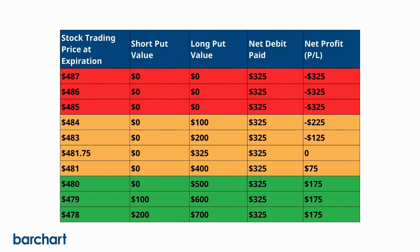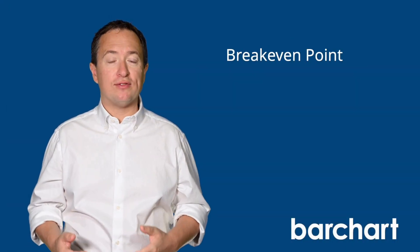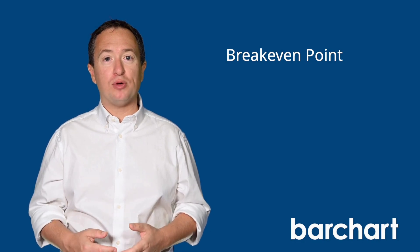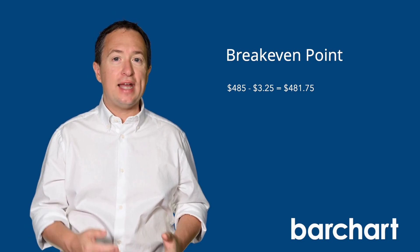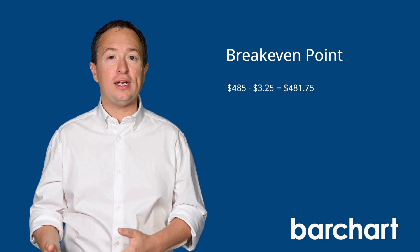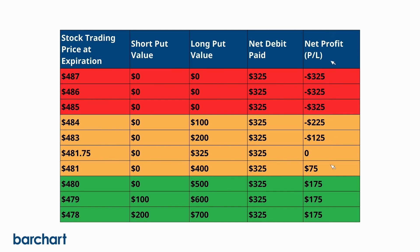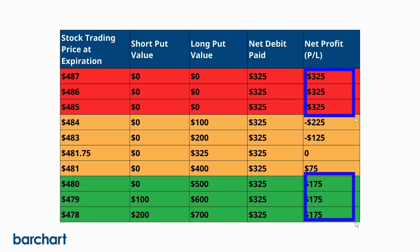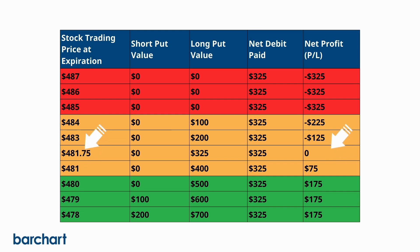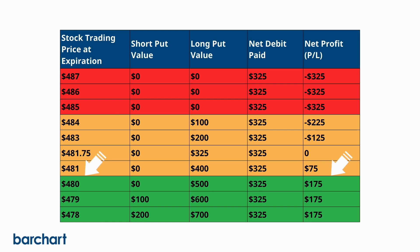Let's have a look at what the profit and losses could look like based on the underlying trading prices. You'll want to know the trade's break-even point to better understand how it goes across the different price points. To get the break-even point on a bear put spread, take the long put strike price and subtract the net debit paid. Since bear put spreads have defined profit and loss potentials, the profit and losses do not exceed $175 and $325. As Meta's price rises above the break-even point, losses start to incur, and anything above $485 means a maximum loss of $325. However, if Meta stays below $480, you get to keep $175 profit.